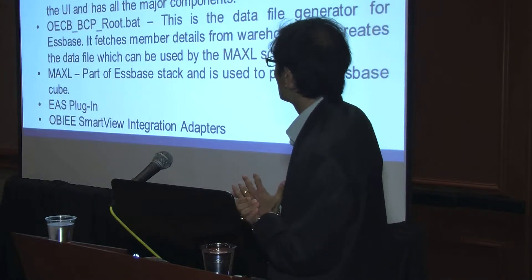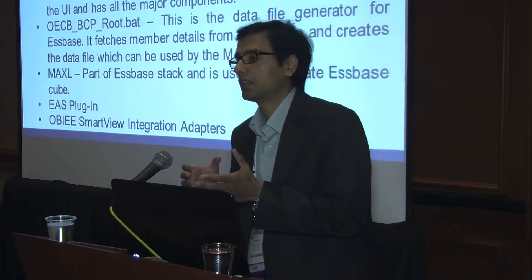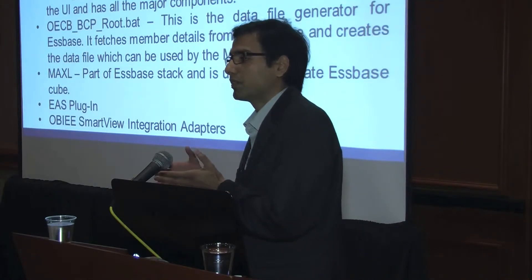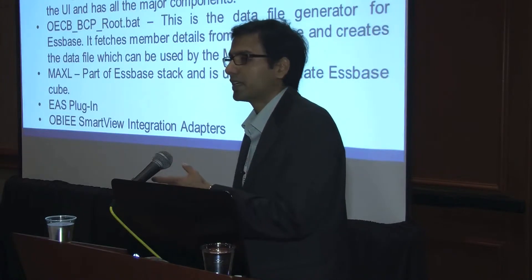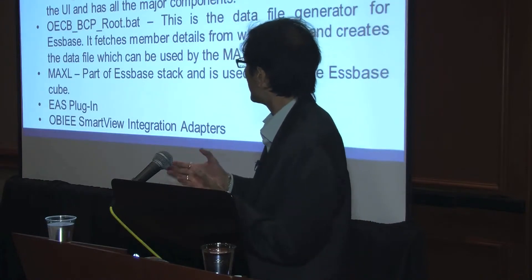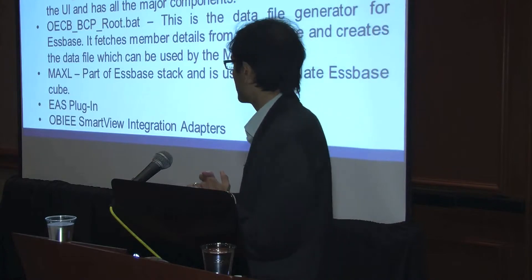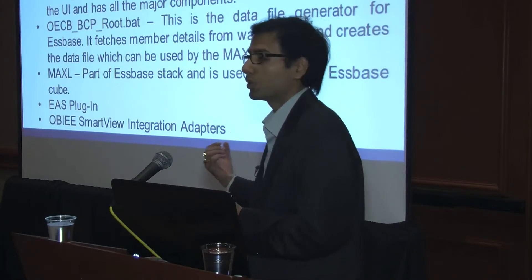The various components included are: OECB_AMI.bat, which is a batch file that has all the content in terms of your data execution and the data load process. You have a BCP root file which generates the data file. Whatever data exists in your data warehouse is in the form of dimensions and facts. On your Essbase, you have a set of dimensions. Before you load data into Essbase, you will have to generate a batch file and a data file — that data file is generated by the OECB vcp_root.bat file. Once the data file has been generated, you will use MaxL scripts to load your Essbase Cube.